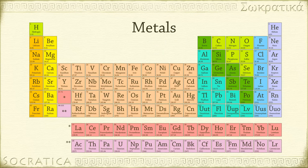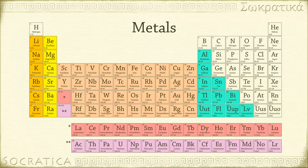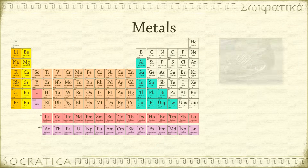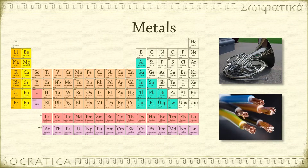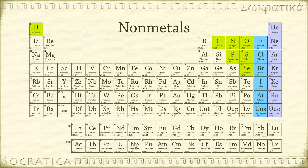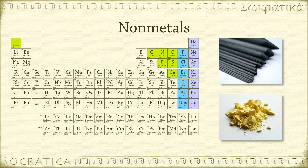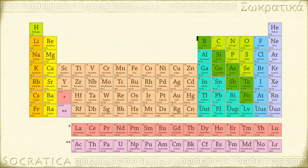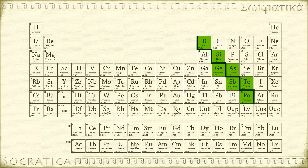Most elements are metals, and you can find them on the left and in the middle of the periodic table. Metallic elements are typically shiny and are good conductors of heat and electricity. Non-metals are found on the upper right of the periodic table, except for hydrogen on the left — it's also a non-metal. Non-metals generally are not shiny and are not good conductors of heat or electricity. The dividing line between metals and non-metals is drawn as a thick staircase, and the elements on either side of that staircase are often called metalloids, with properties that fall between metals and non-metals.